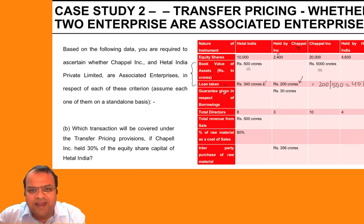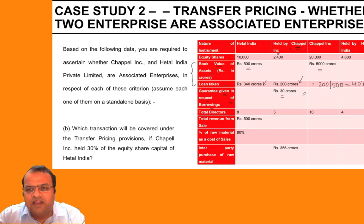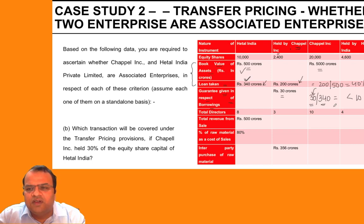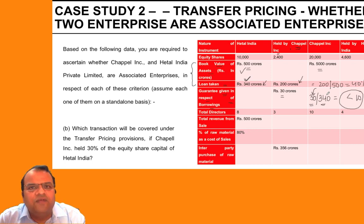The third criteria is the guarantee given in respect of borrowings. A guarantee of 30 crores has been given, while total borrowings are 340 crores. 10% of 340 is 34 crores, and since the guarantee of 30 crores is less than 10% of total borrowings, the two parties will not be related parties on this account.